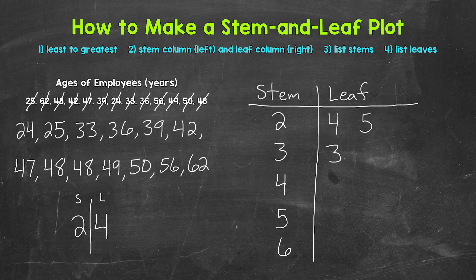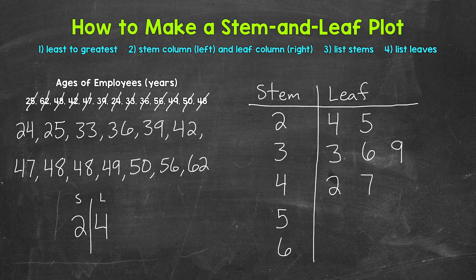36: stem of 3, leaf of 6. Next we have 39, so we need a leaf of 9. Now we have 42, so move down to the stem of 4: stem of 4, leaf of 2. Then 47 — we need a leaf of 7. Then we have 48, so a leaf of 8. Another 48, so another leaf of 8. Then we have 49, so a leaf of 9.